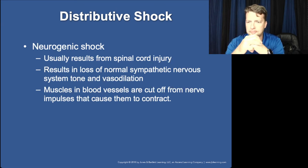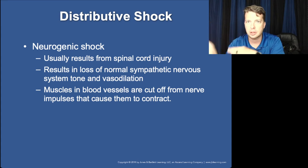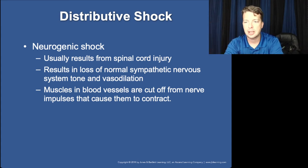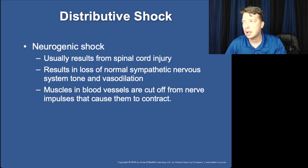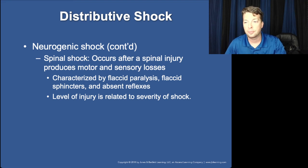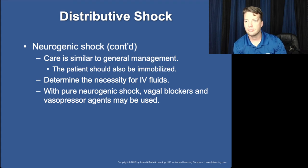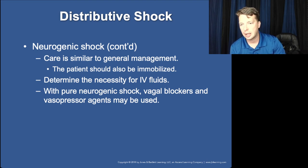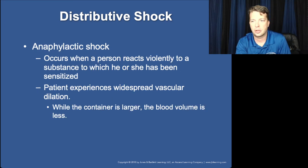Neurogenic shock results from spinal cord injuries — it's a loss of sympathetic nervous system tone. Similar to sepsis, all vessels dilate and container size increases, but this is caused by a lack of epinephrine rather than infection. You'll also see generalized neural paralysis in addition to signs of shock. Treatment involves managing the trauma, giving fluids to maintain radial pulses, and potentially vasopressors.